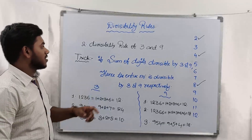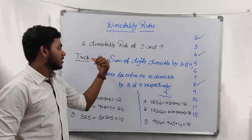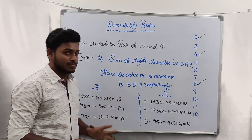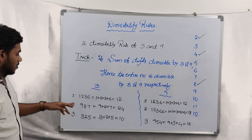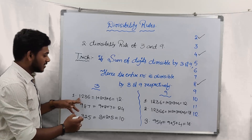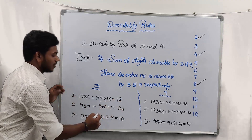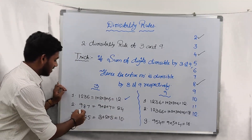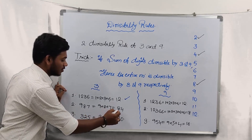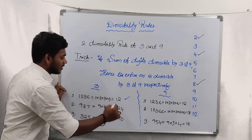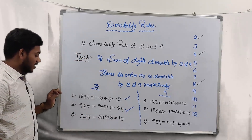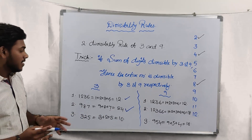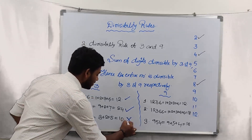This one is applicable for both 3 and 9. The trick is: if the sum of the digits is divisible by 3 or 9, hence the entire number is divisible by 3 or 9 respectively. For example, 1236 — the sum of the digits is 1+2+3+6 = 12. 12 is divisible by 3, hence the entire number is divisible by 3. For 987, 9+8+7 = 24, which is divisible by 3, so the entire number is divisible by 3. For 325, 3+2+5 = 10, which is not divisible by 3, hence 325 is not divisible by 3.